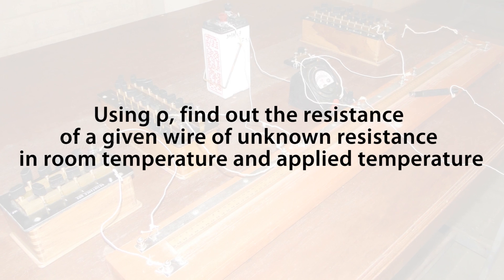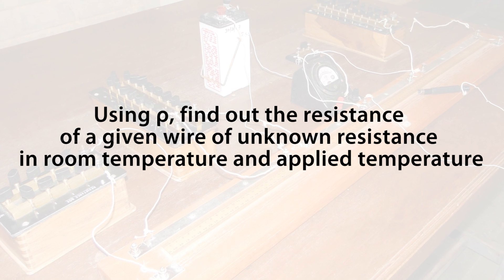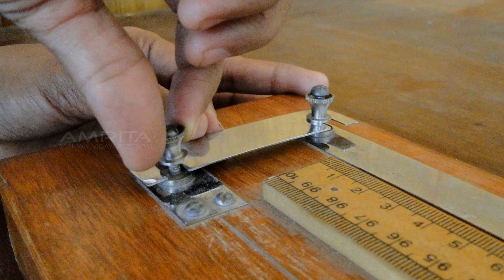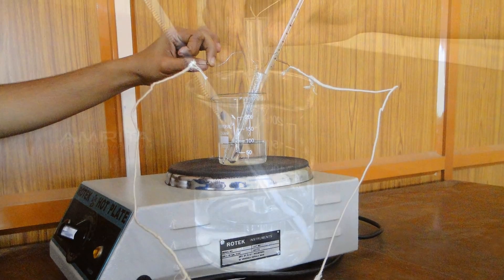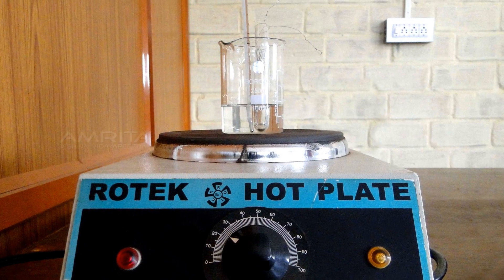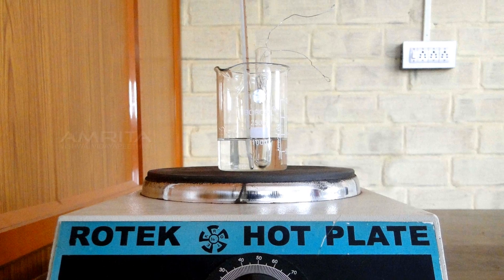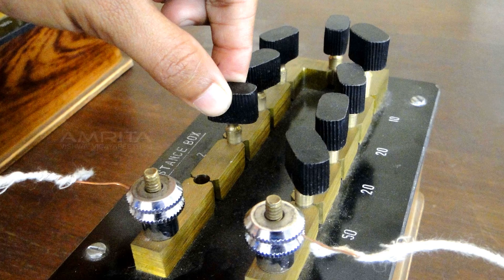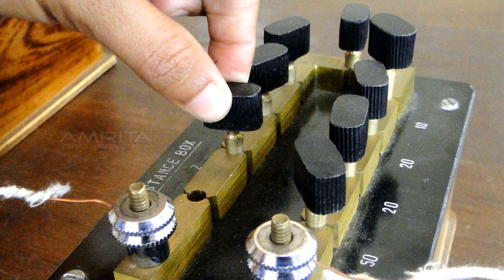Using rho, find out the resistance of a given wire of unknown resistance in room temperature and applied temperature. Remove the copper strip and insert the unknown low resistance, a beaker with water, thermometer, heater, and a test tube with unknown resistance inside it in one of the outer gaps of the bridge. Set the resistance of the fractional resistance box a little high, ranging from 1 to 10.